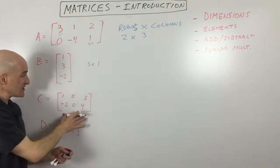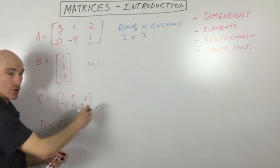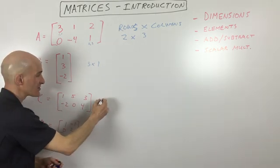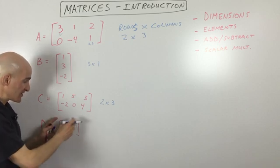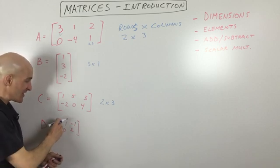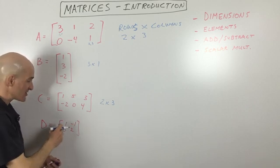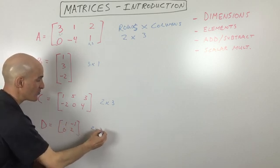This one here, matrix C, has one, two rows and one, two, three columns, so this is a two by three. And the last one here, this is actually called a square matrix because it looks square, right? And it's two rows, two columns - the same number of rows as columns, two by two.